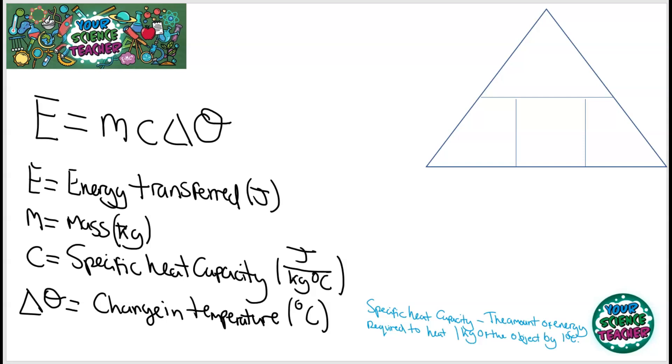And from that definition, we can come up with an equation of energy equals mass times the specific heat capacity times the change in temperature. And if I'm to put it into triangles, you'll know if you've seen my videos before, I like to put my equations into triangles. It helps me then rearrange that equation because often you want to be able to calculate specific heat capacity.